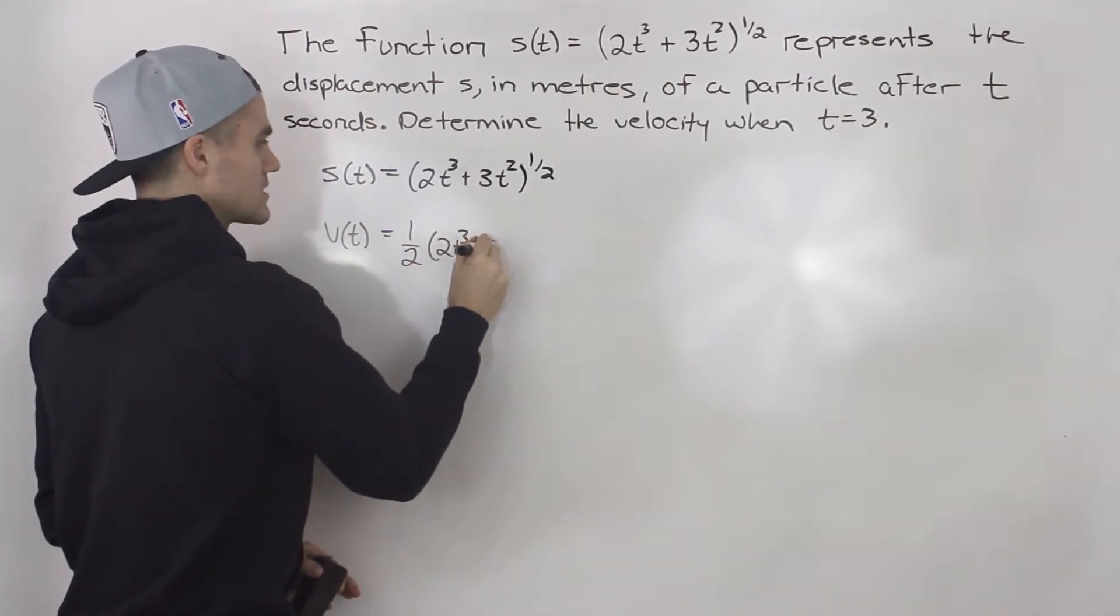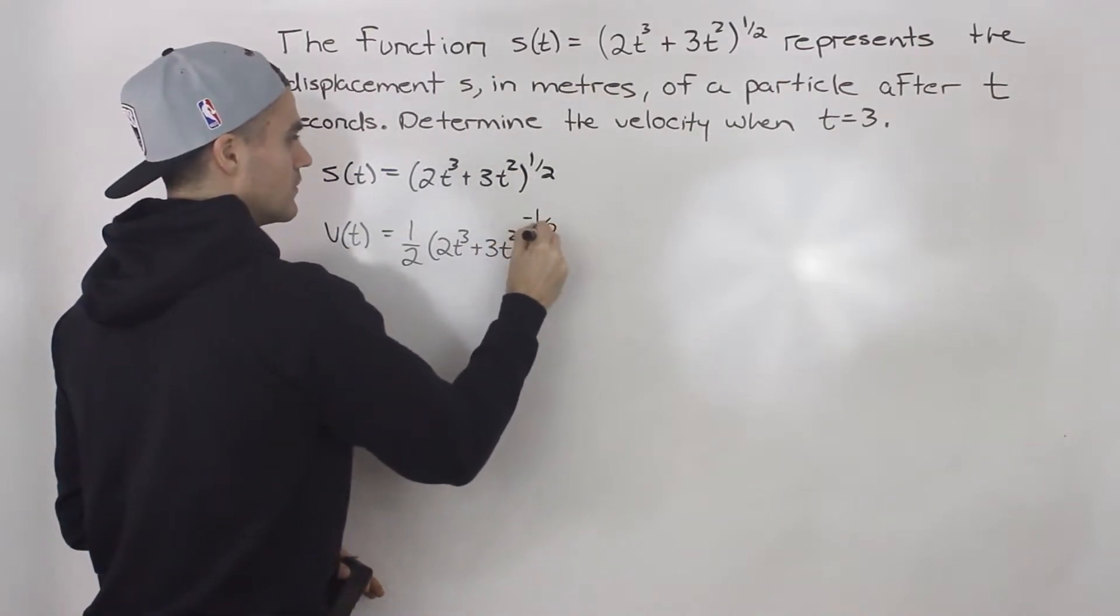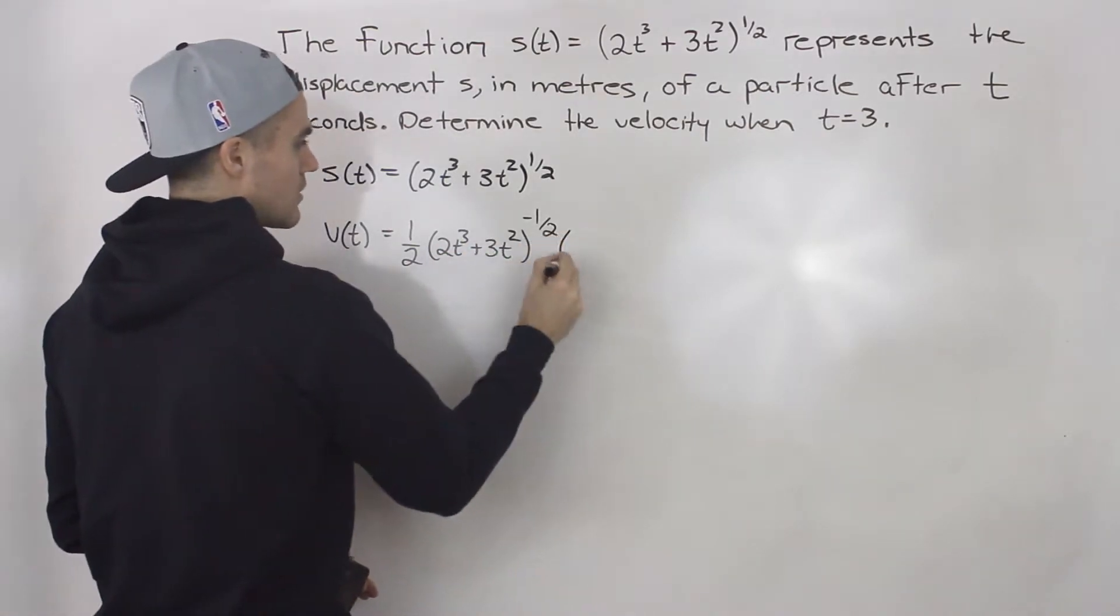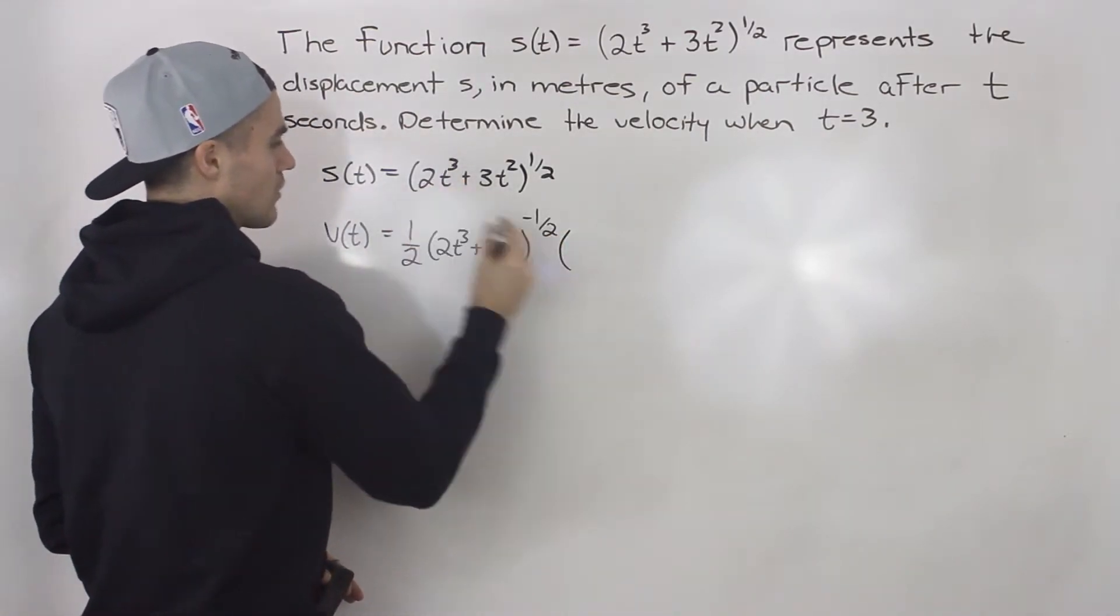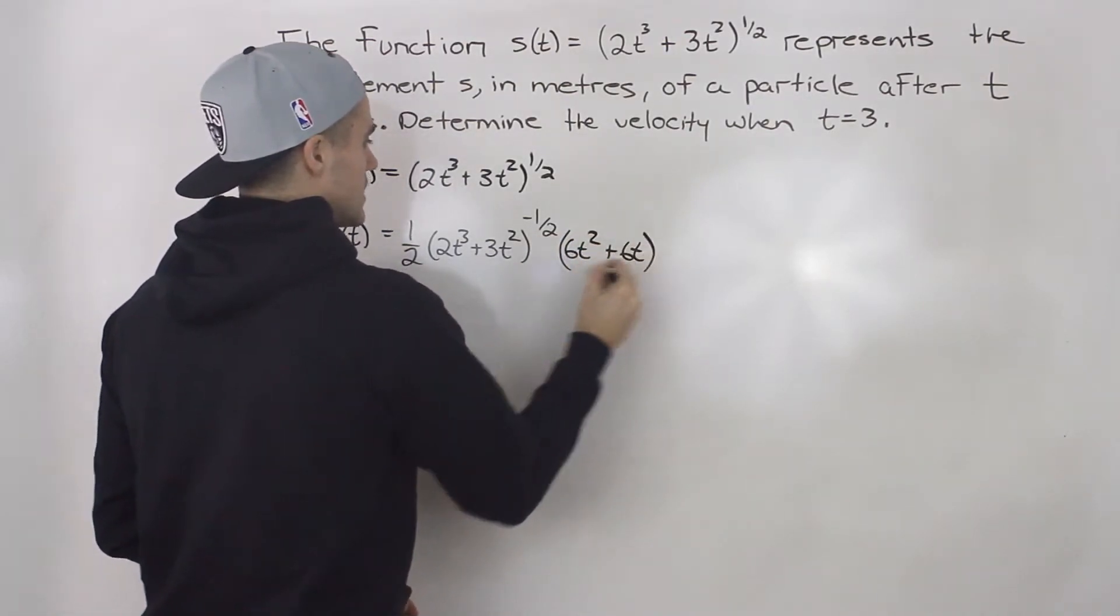And then we have to take the derivative of the inside function. So bringing the three down, we'd have 6t² plus 6t.